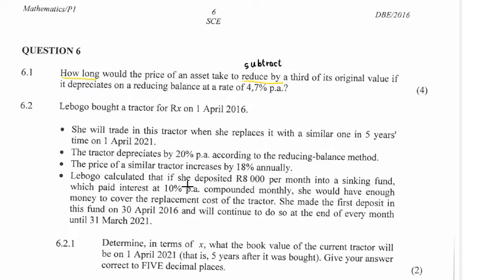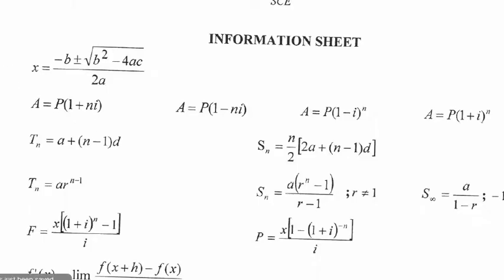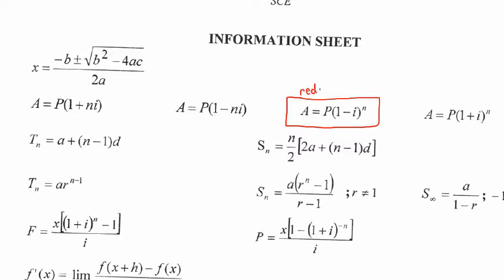We should also be able to remember all our formulas, but if you don't, at the end of the question paper there is a formula sheet. If we are looking at depreciation, we're always looking at formulas with a minus sign in them, and if it's reducing balance, then it's the formula in exponential form. The other one is called straight line.